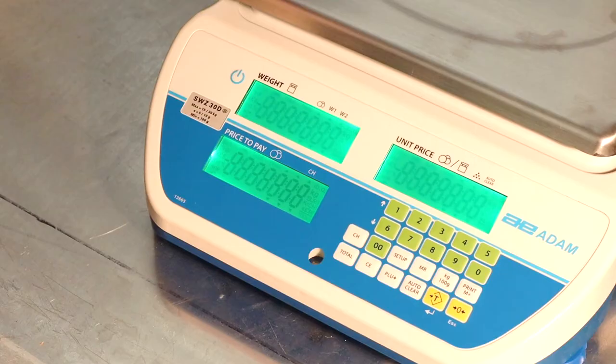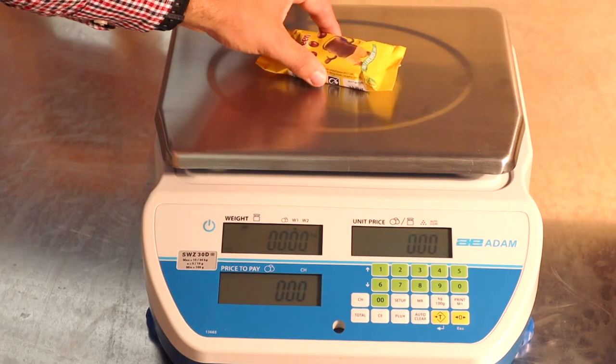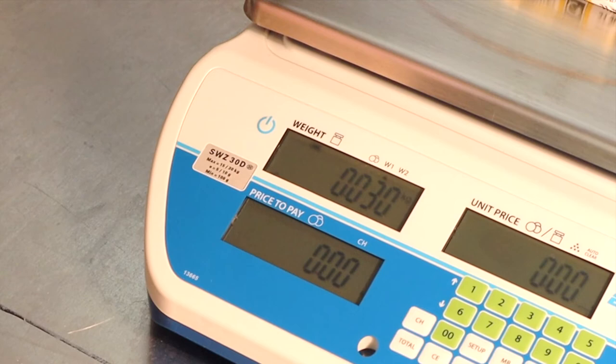To switch the scale on, simply press the power button, and when you see a line of zeros, you're ready to begin. To get a weight, add an item to the scale, and the weight will appear on the weight screen.